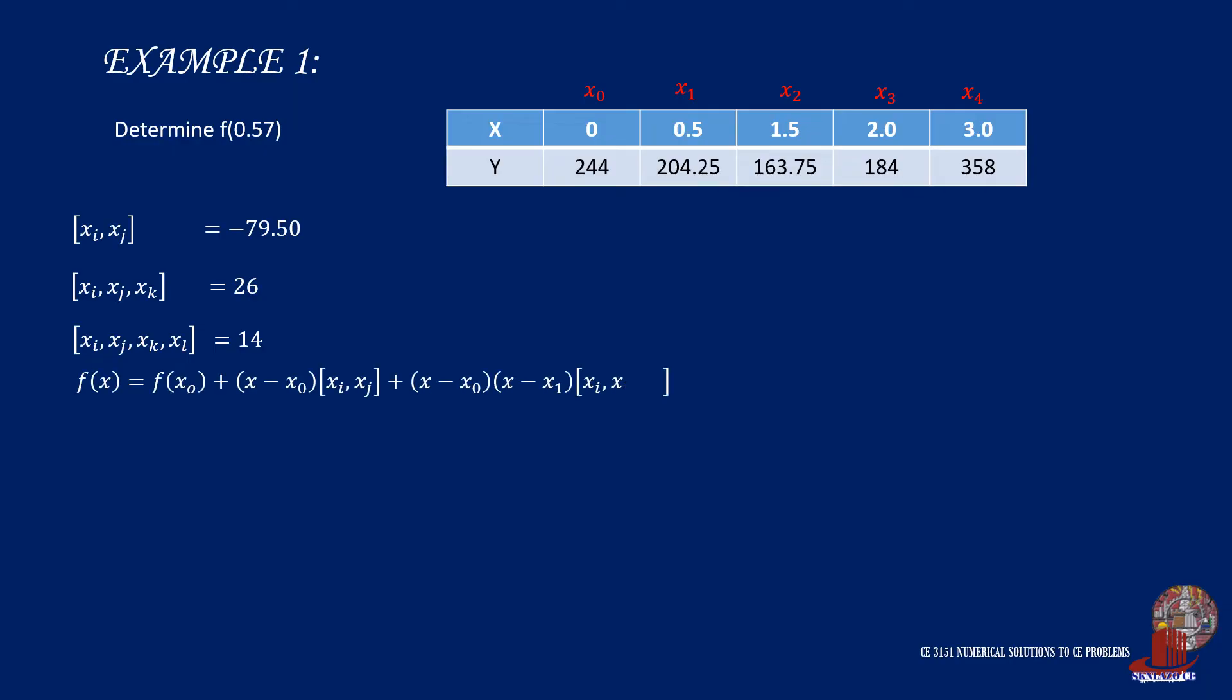All we need to do now is to plug them into the equation. So f of 0.57 is f of x0, which is 244. The next term is the quantity of x minus x0 multiplied by xi times xj. That is 0.57 less 0, then multiply this with negative 79.5. Again, the next term is similar. It is 0.57 minus 0, multiplied by 0.57 minus 0.5, and again multiplied by xi xj xk, which is 26.